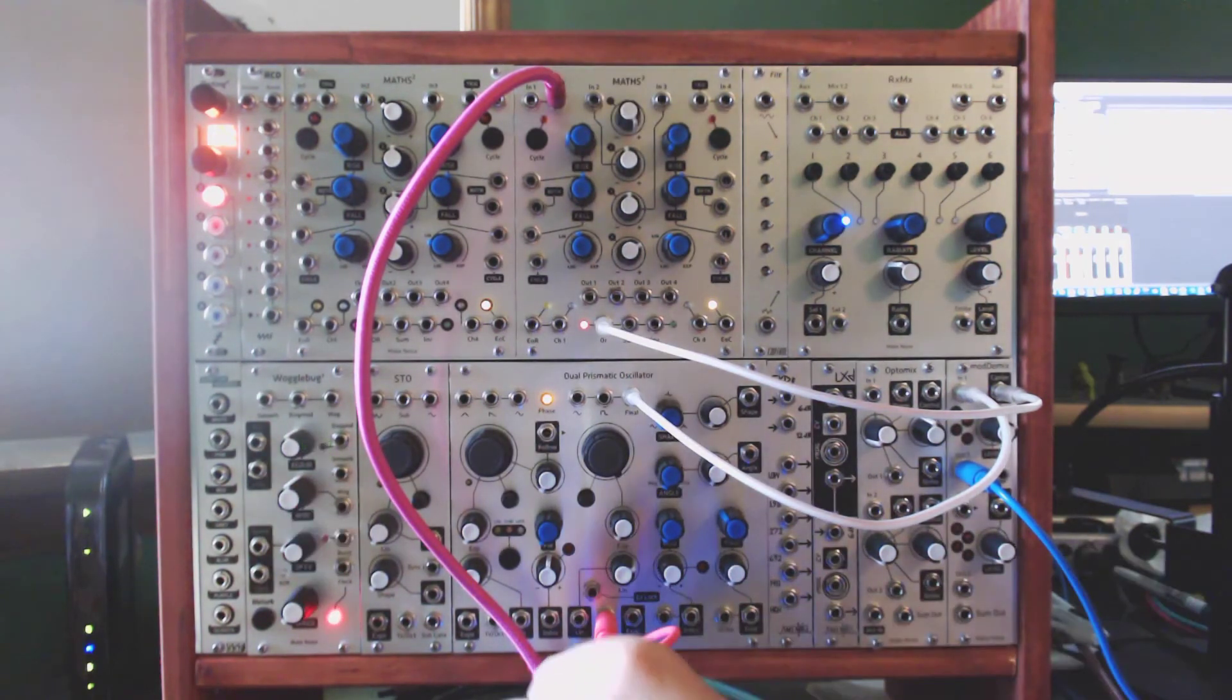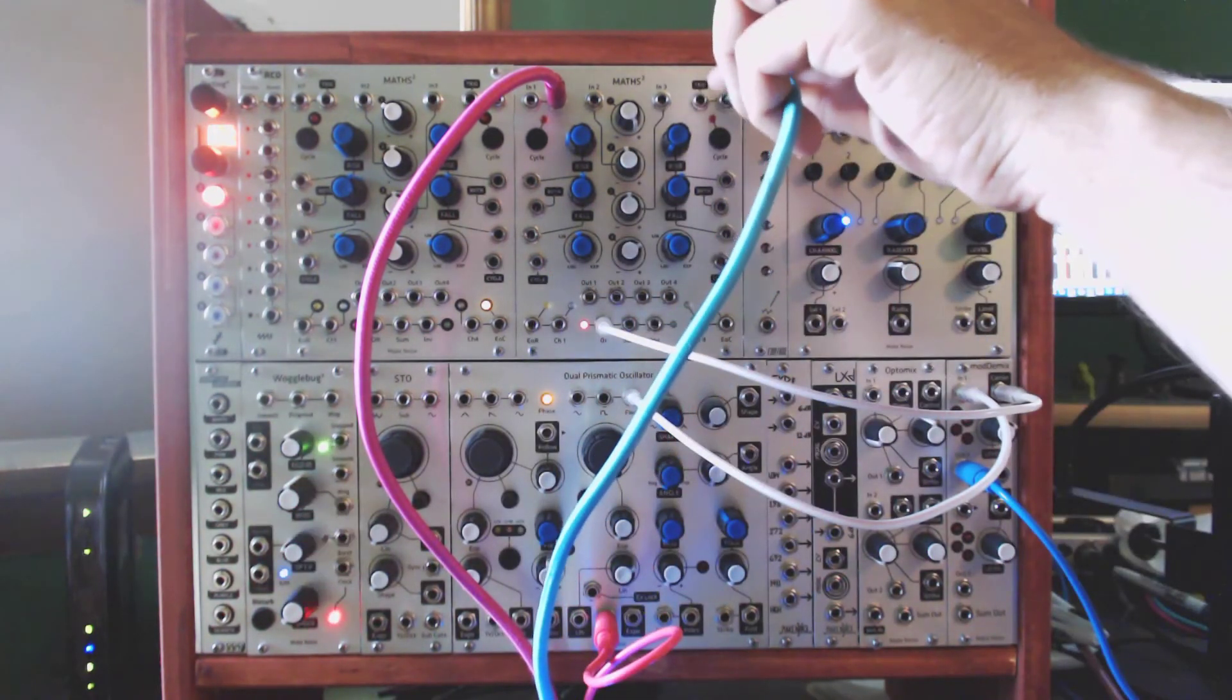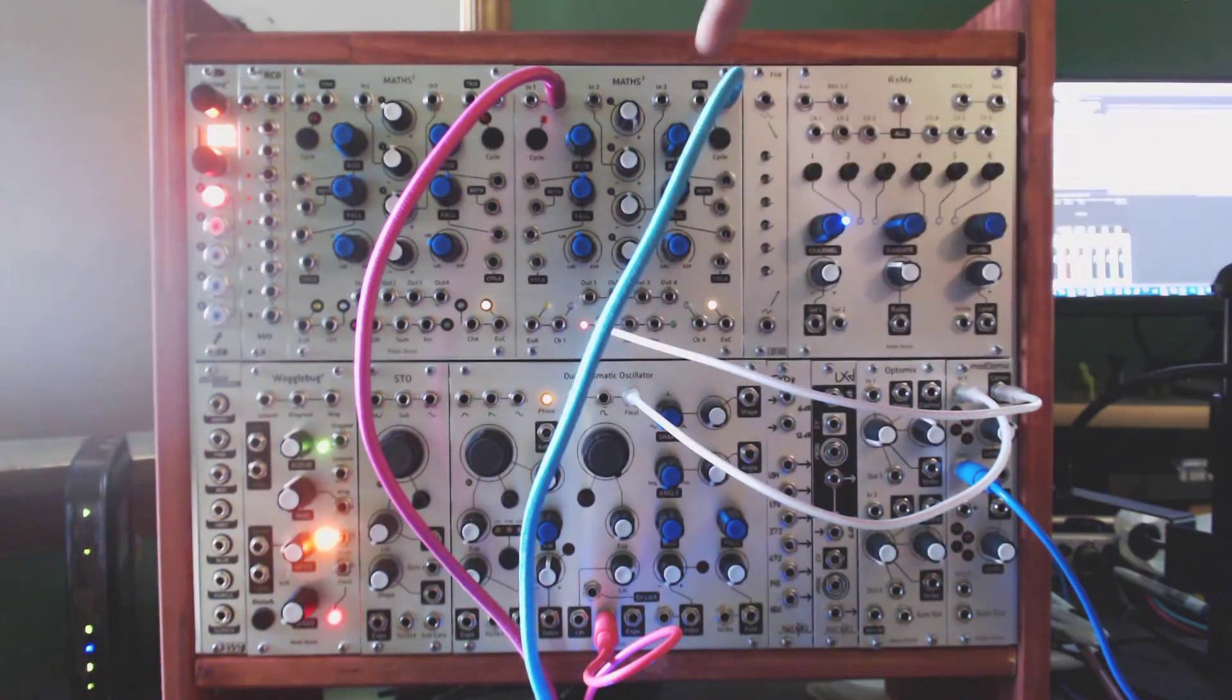Now, this keyboard controller, you can either mult this signal, or it puts out 2 of the same gate signal. And on channel 4, we're not going to send the signal into the trigger input. We're going to send it to the signal input.